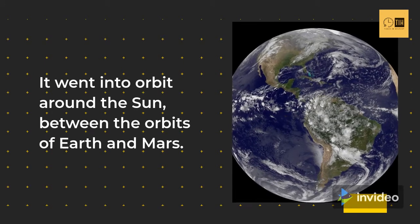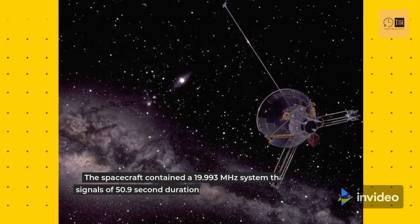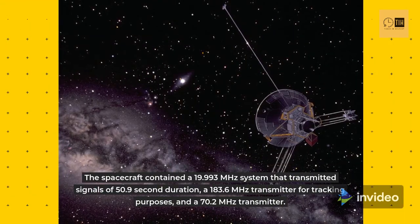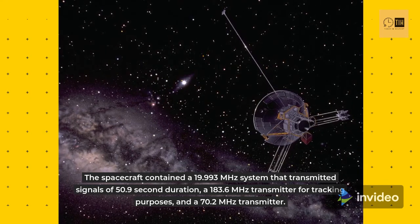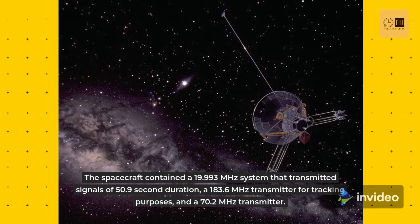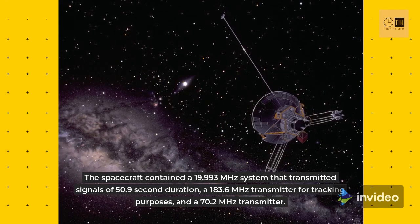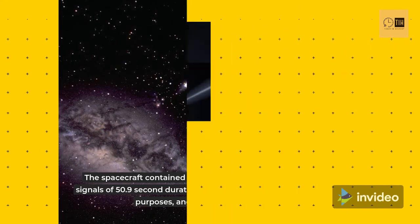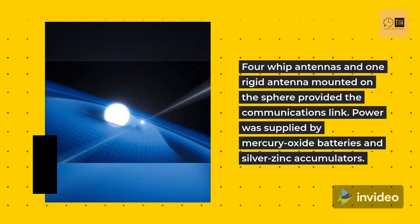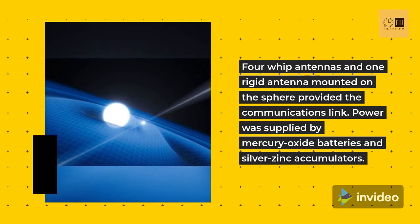The spacecraft contained a 19.993 MHz system that transmitted signals of 50.9 second duration, a 183.6 MHz transmitter for tracking purposes, and a 70.2 MHz transmitter. Four whip antennas and one rigid antenna mounted on the sphere provided the communications link.